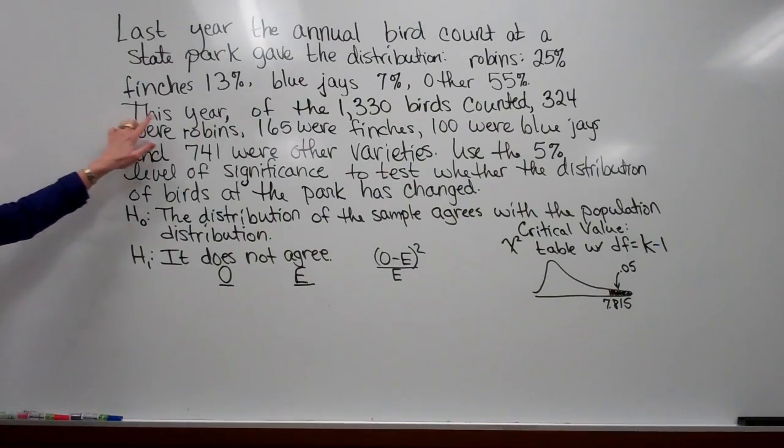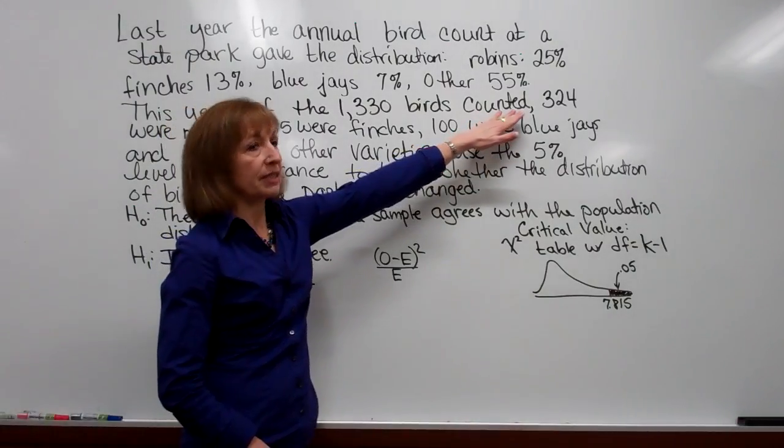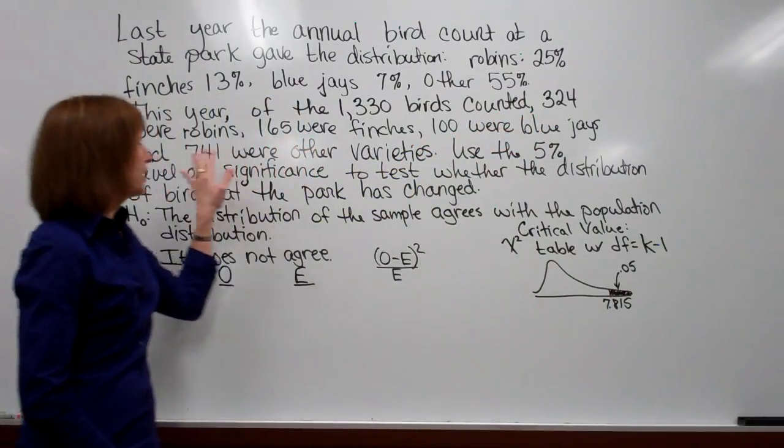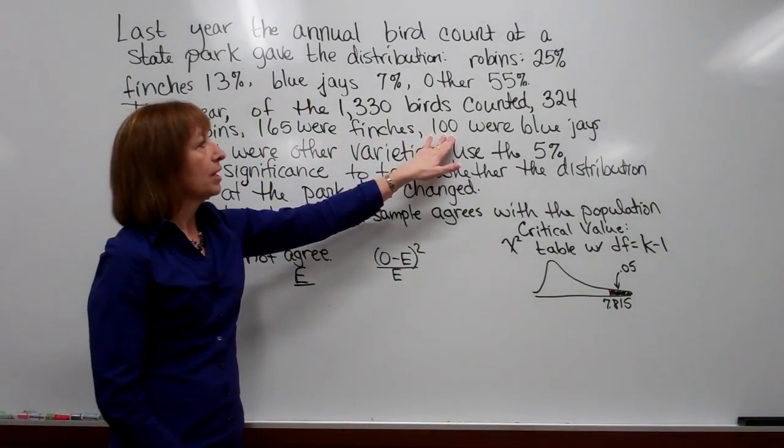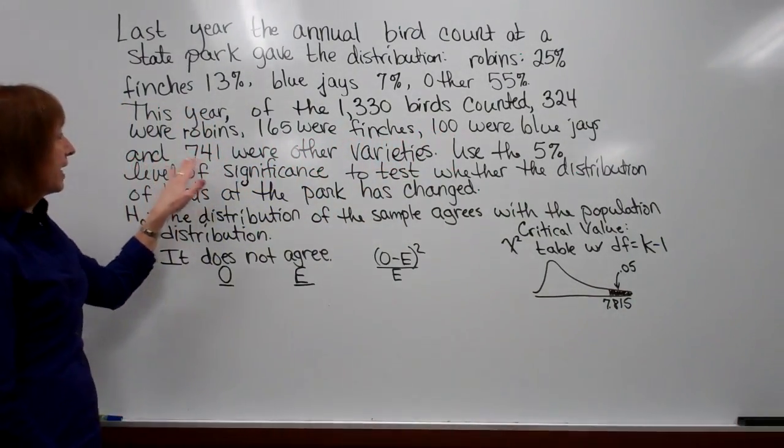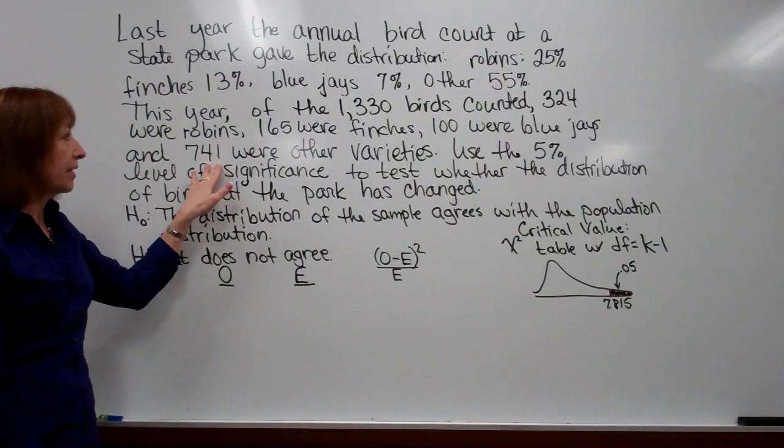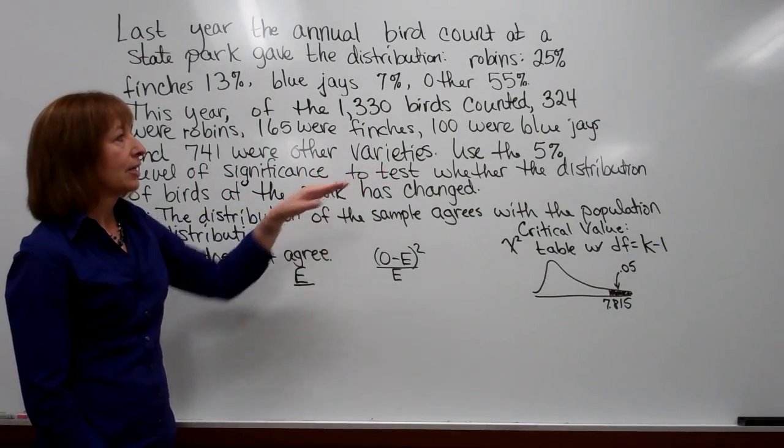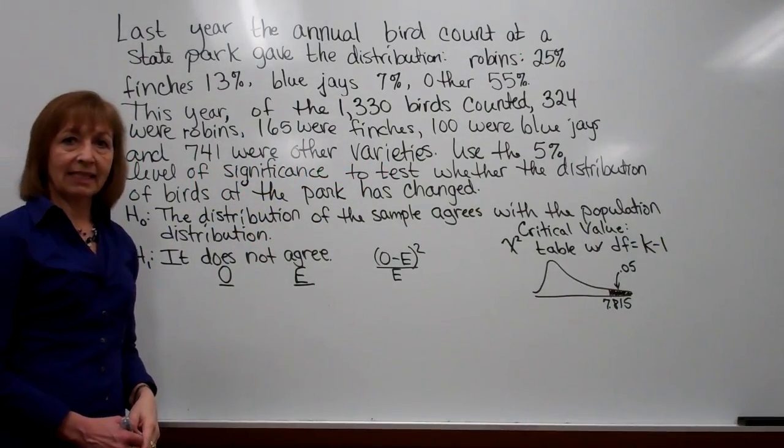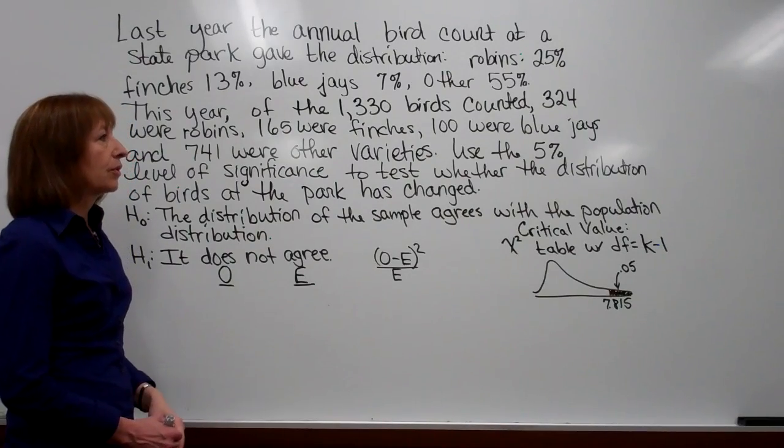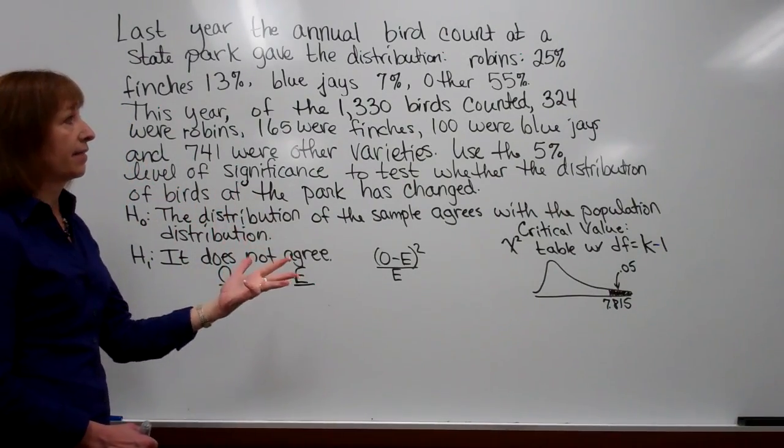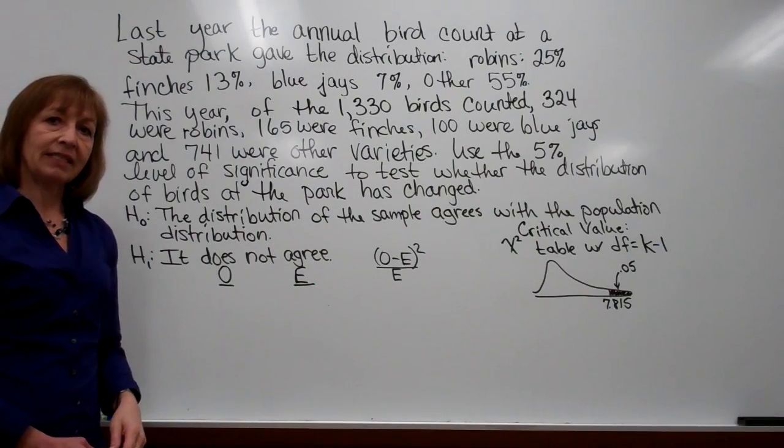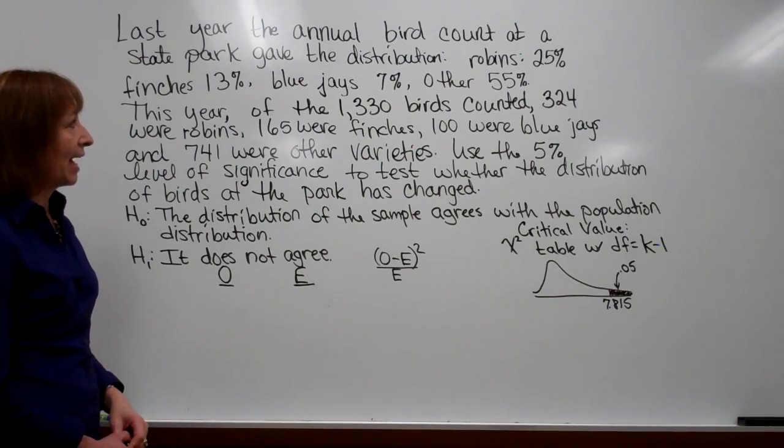This year of the 1,330 birds counted, 324 were robins, 165 were finches, 100 were blue jays, and 741 of them were other varieties. So we have them randomly selected, we have frequency counts for different categories, and for each of these the expected value is at least five.